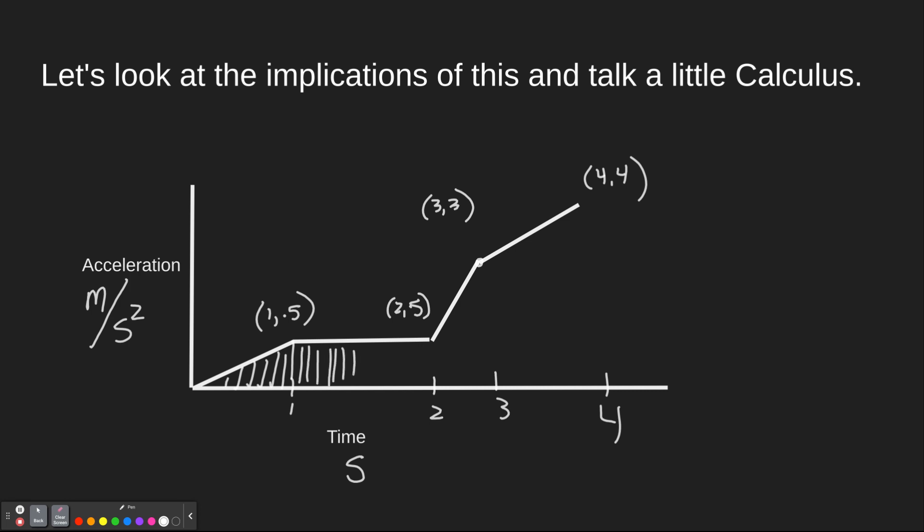So what would happen if we multiplied our time times our acceleration? Well, it would kind of give us the area underneath this. Granted, the triangles would have different area than rectangles, and rectangles might have different area than trapezoids, but you're going to end up with area under this.